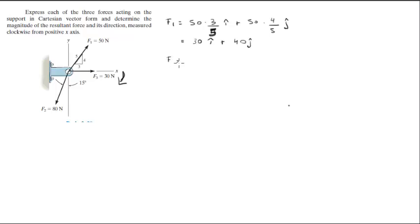Now force 2, which is this one down here, it's going to be this part of the triangle and this part of the triangle. It's a right triangle, so 80 times the sine of 15 degrees, you know this angle right here is 15 degrees, in the negative i unit vector direction minus 80 cosine of 15 degrees in the negative j direction.